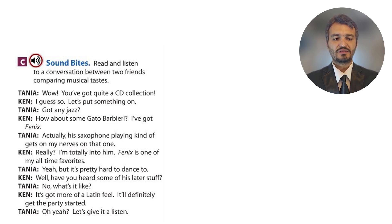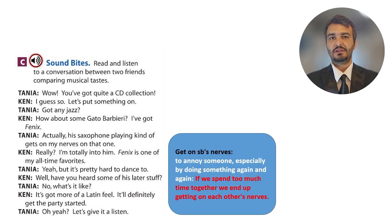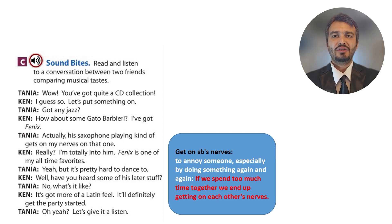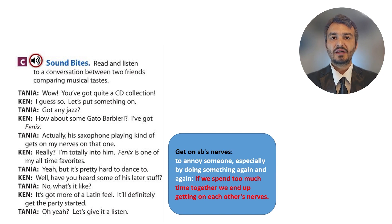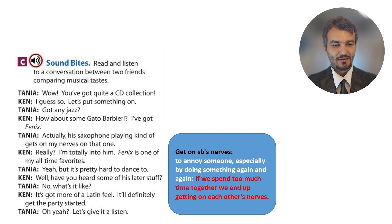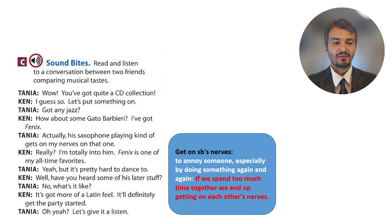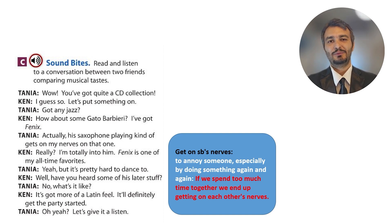Tanya says: 'His saxophone playing kind of gets on my nerves on that one.' 'To get on one's nerves' means it makes you crazy, angry — you cannot tolerate it. Whenever Gato Barbieri plays saxophone, it really irritates Tanya. Ken says: 'What? Really? I'm totally into him. Phoenix is one of my all-time favorites.' 'I'm into someone or something' means I really enjoy it — I'm a big fan.